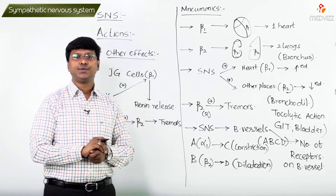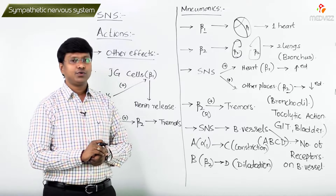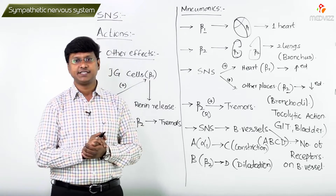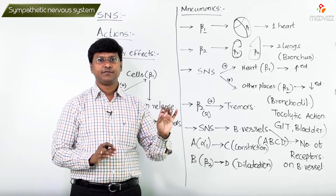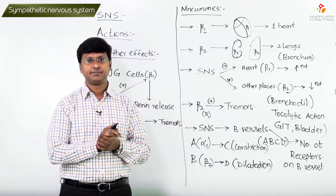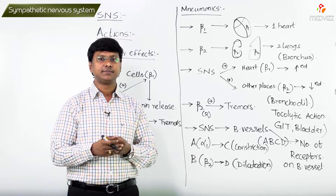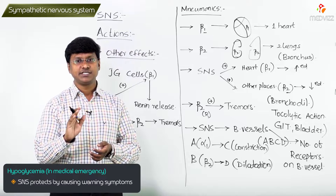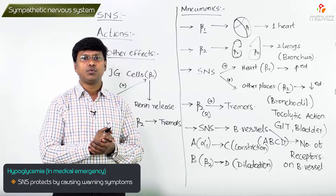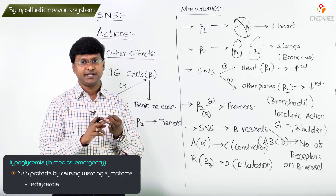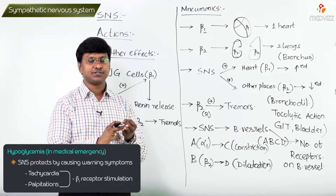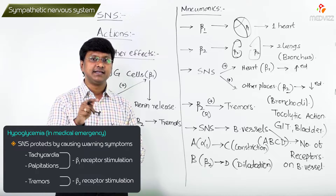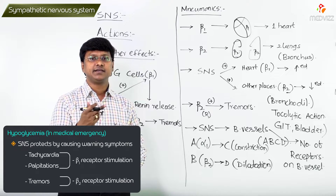Next, consider hypoglycemia. Hypoglycemia is a medical emergency — whenever blood glucose falls, the sympathetic system protects from this emergency. It does so by causing warning symptoms: tachycardia and palpitations via beta-1 receptor stimulation, and tremors via beta-2 receptor stimulation. Beta-2 receptors in the liver will also help reverse the hypoglycemia.